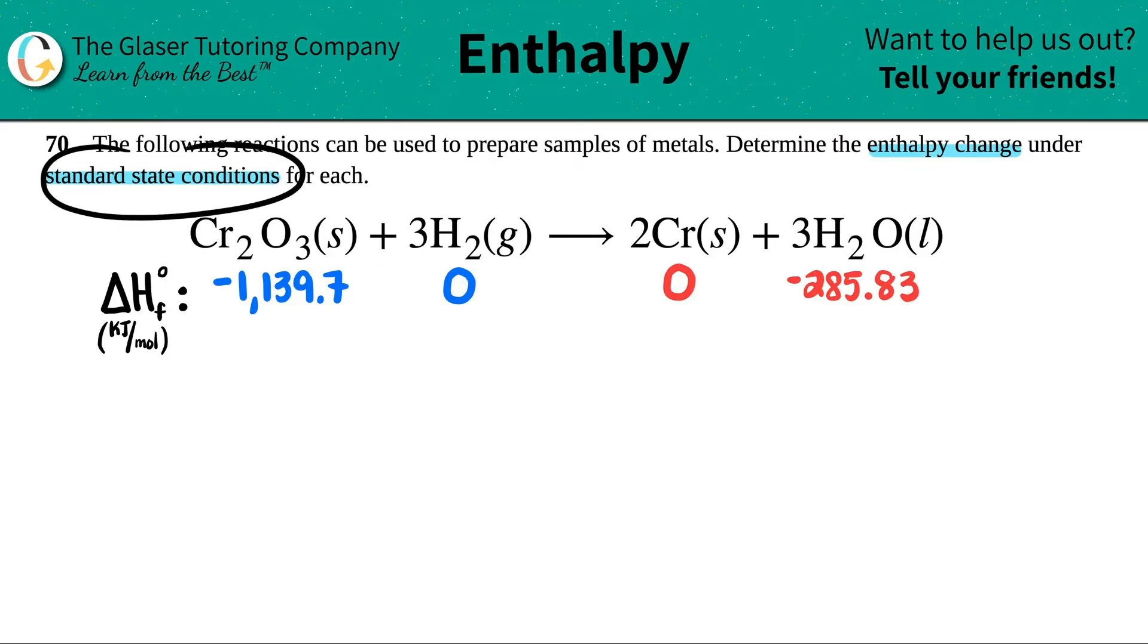When they say standard state conditions, they mean that you need to go find the numbers in an appendix at the back of your textbook. They only care about the enthalpy, so we only care about the delta H values. Delta H is enthalpy. What I did for you is I went into the back of a textbook and I got the delta H values for each of these components.